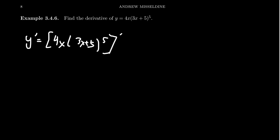You'll notice there's a couple things going on here, but the first thing to note is that this is a product of two different functions. We have 4x times 3x plus 5 to the fifth power, and so before we can do anything else, the first thing we have to do is apply the product rule.